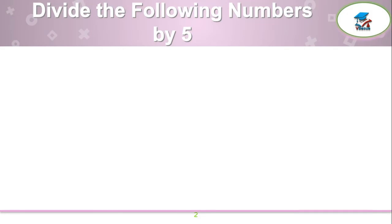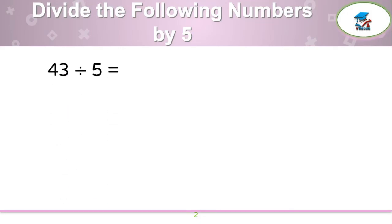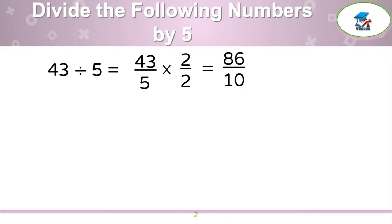Divide the following numbers by 5. First example: 43 by 5. Write 43 over 5. It should be multiplied by 2 over 2, and that will become 86 over 10, and your answer will become 8.6.